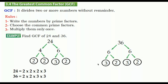Now we are going to choose the common prime factors. This two and this two — they are common, so we circle them. This two and this two — they are also the same, so we circle them. This three and this three — they are common and the same, so we circle them as well.